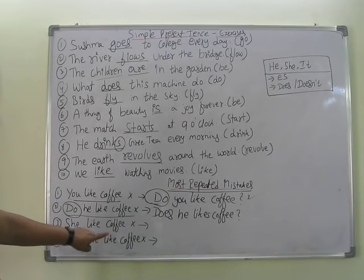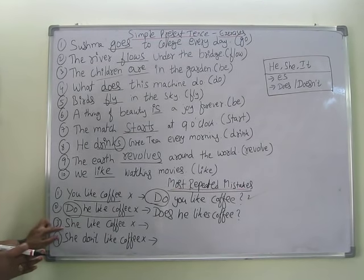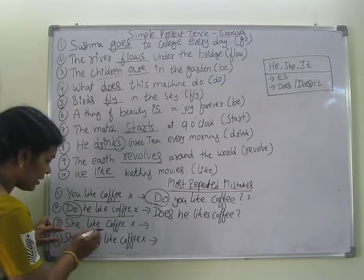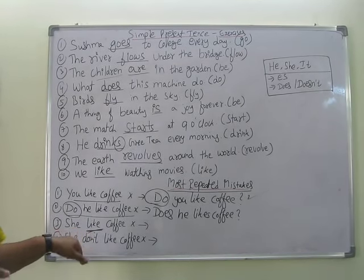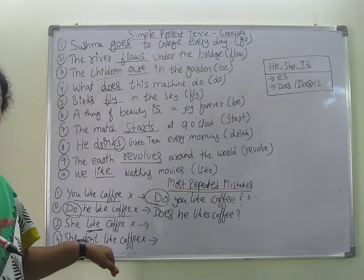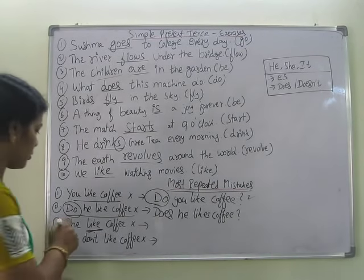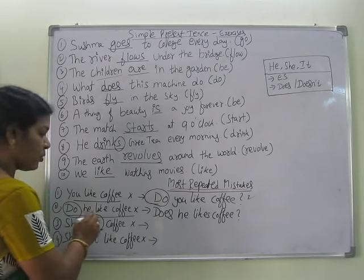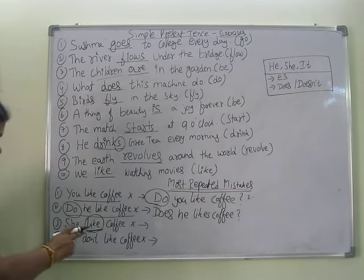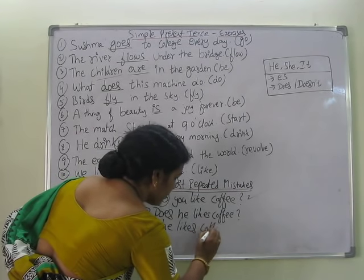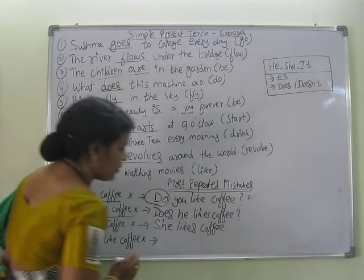Next: 'She like coffee' — this is wrong. With she, he, or it, we must add 's' to the verb. So is it 'like' or 'likes'? It is 'likes'. The correct sentence is: She likes coffee.